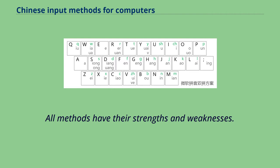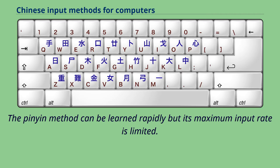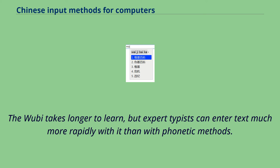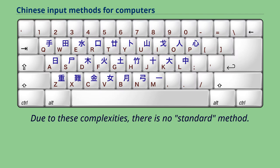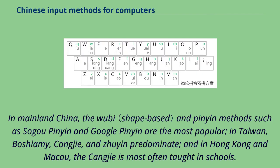All methods have their strengths and weaknesses. The Pinyin method can be learned rapidly but its maximum input rate is limited. The Wubi takes longer to learn, but expert typists can enter text much more rapidly with it than with phonetic methods. Due to these complexities, there is no standard method. In mainland China, the Wubi and Pinyin methods such as Sogou Pinyin and Google Pinyin are the most popular. In Taiwan, Bopomofo, Cangjie, and Dayi predominate, and in Hong Kong and Macau, Cangjie is most often taught in schools.